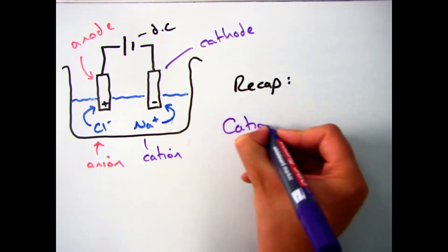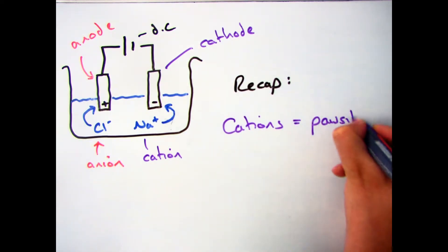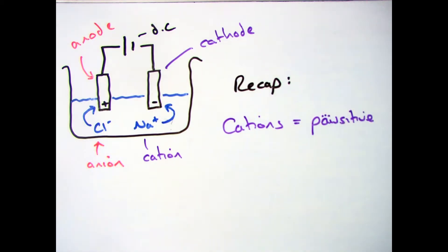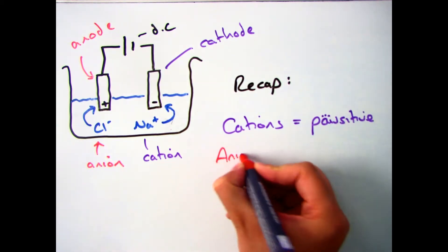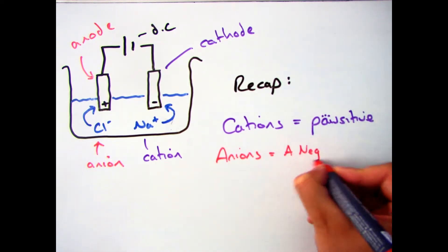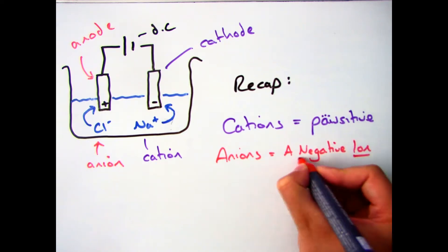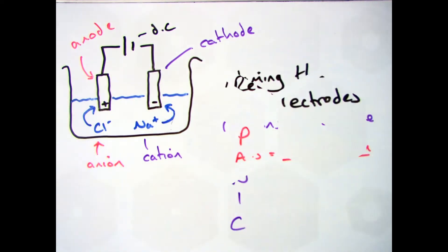Just a recap: cations are positive, so all your metals are positive and will move to the negative electrode. Anions are negative ions, so they will move to the positive electrode.